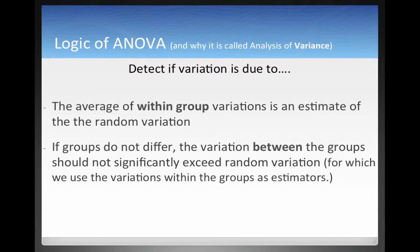So we have A, the random variation. And to get an idea, an estimate of what the random variation is, how much it is, we look at the within-group variation.